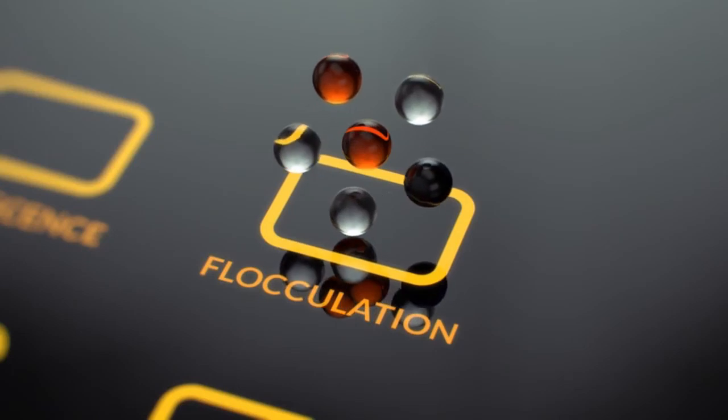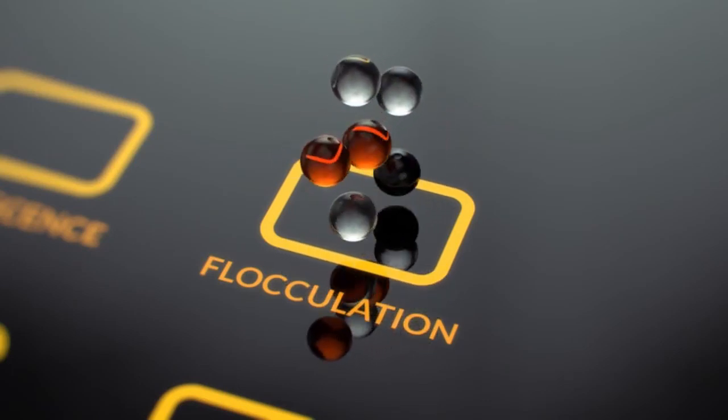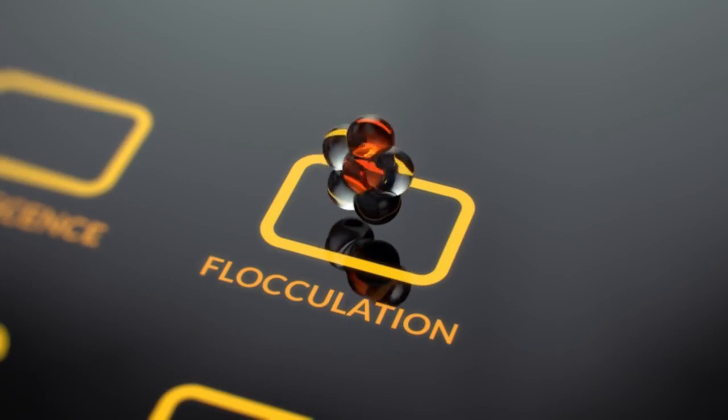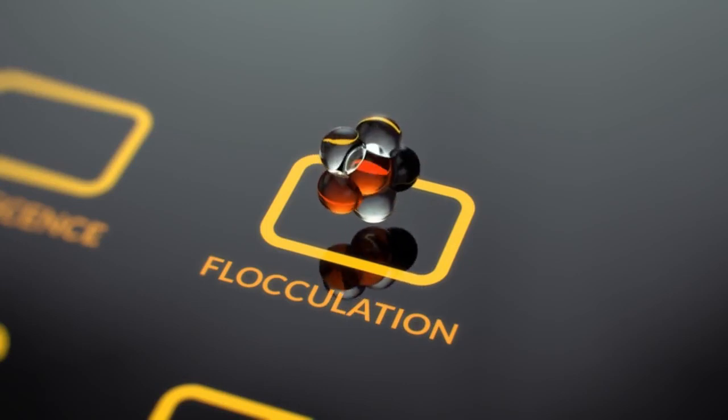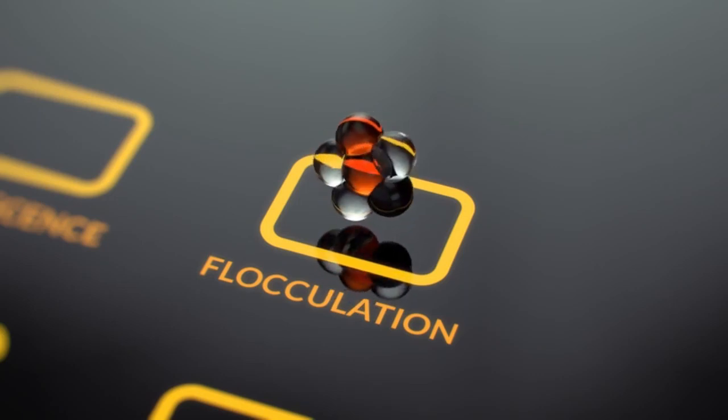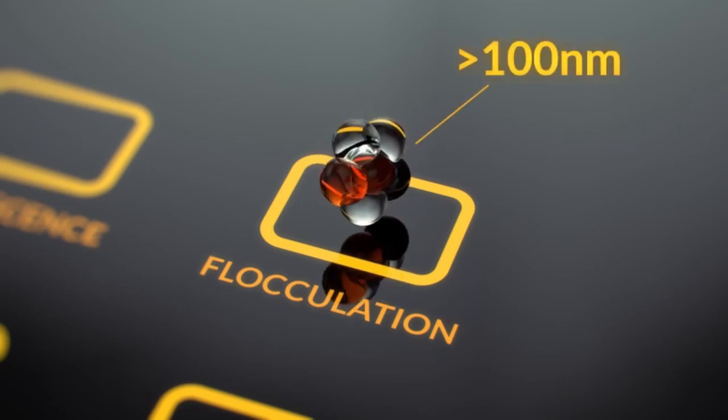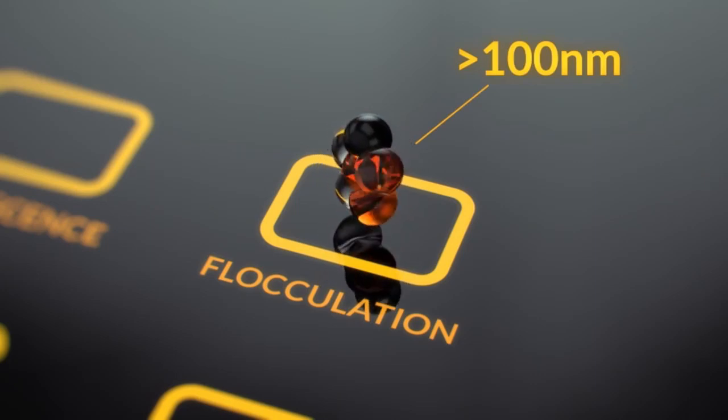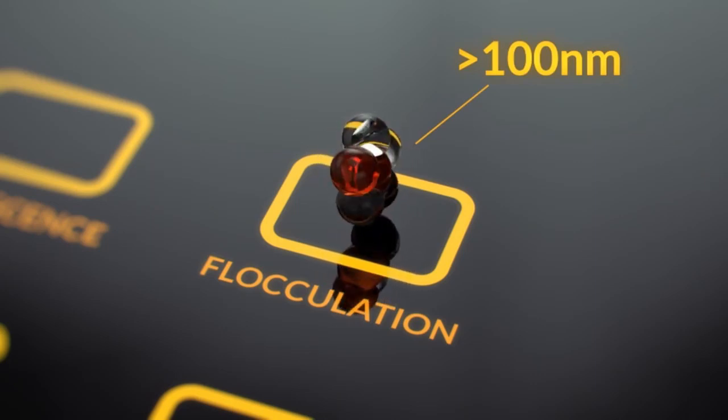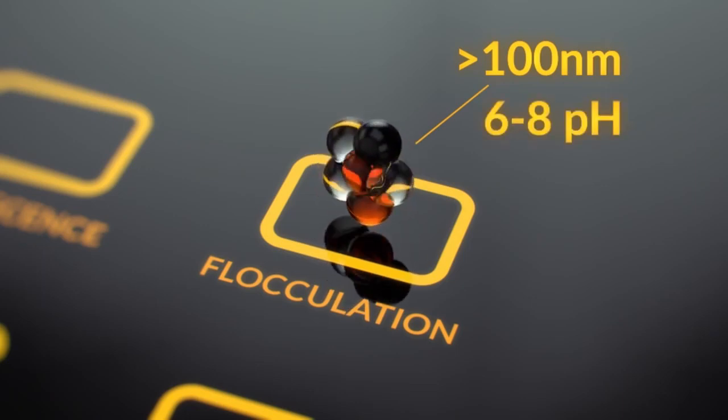Flocculation is a process by which two or more particles aggregate, stick together, without losing their individual boundaries. We help the flocculation process along by adding a flocculating agent. This process will form particles larger than 100 nanometers, and these particles called flocks will then be able to settle. This works best at a pH of between 6 and 8.